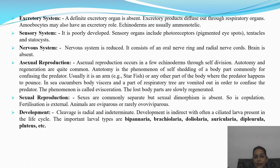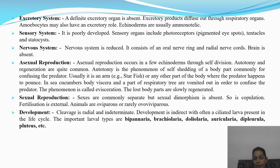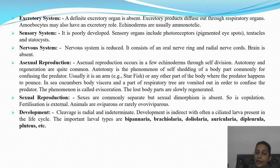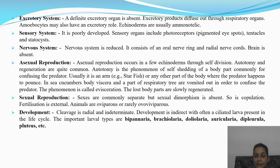Excretory system: a definite excretory organ is absent; excretory products diffuse out through respiratory organs. Amoebocytes may also have an excretory role. Echinodermates are usually ammonotelic. Sensory organs are poorly developed — if present, there are photoreceptors, pigmented eye spots, tentacles, or statocysts. Nervous system is reduced, consisting of an oral nerve ring and radial nerve cords; brain is absent. Asexual reproduction occurs in few echinoderms through self-division. Autotomy and regeneration are common — autotomy means self-shedding, where the organism cuts off its own part to confuse a predator; the cut part continues to flicker, giving the organism time to escape.